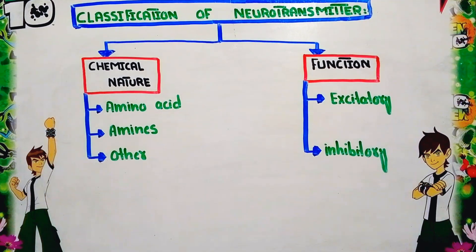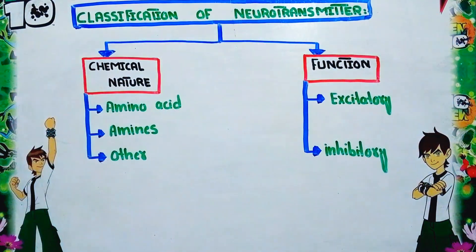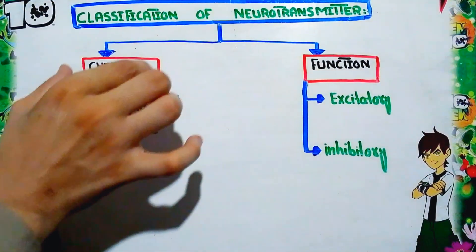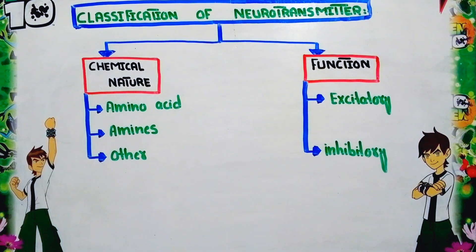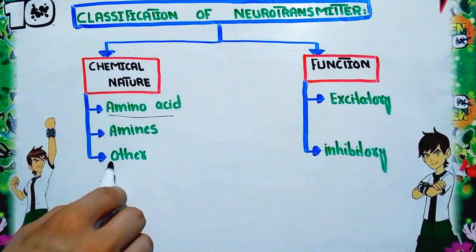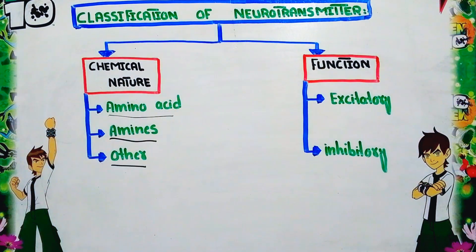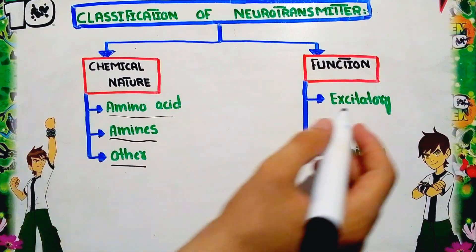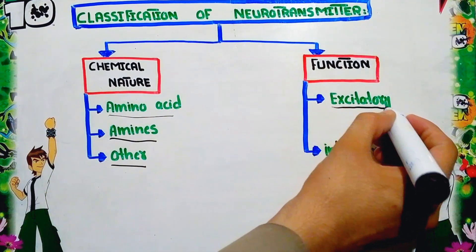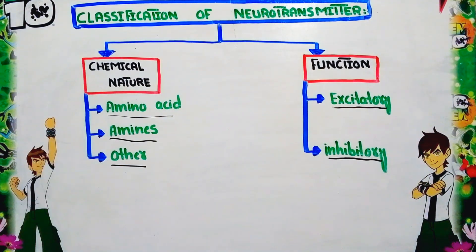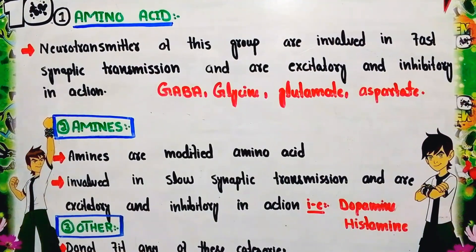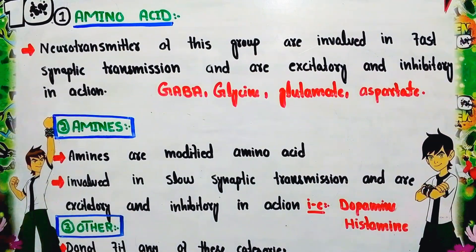Now we will discuss the classification of neurotransmitters on two bases: first, on their chemical nature; second, on the basis of function. Based on chemical nature there are three types: amino acids, amines, and others. Based on function there are two categories: excitatory and inhibitory neurotransmitters.